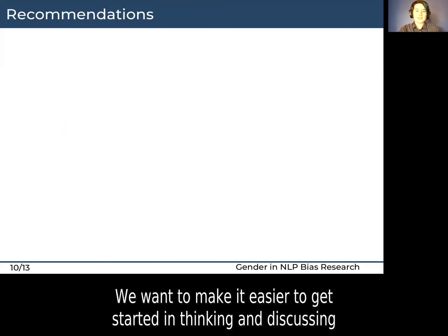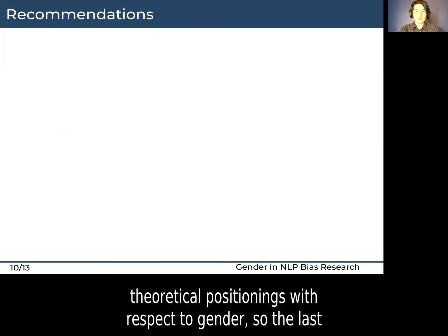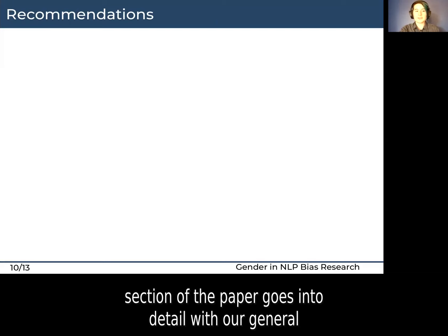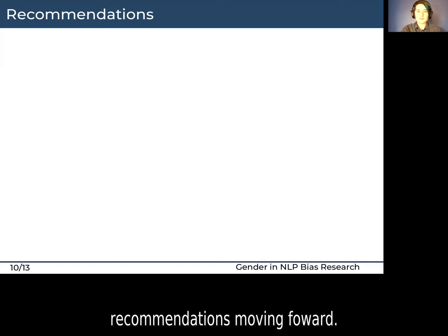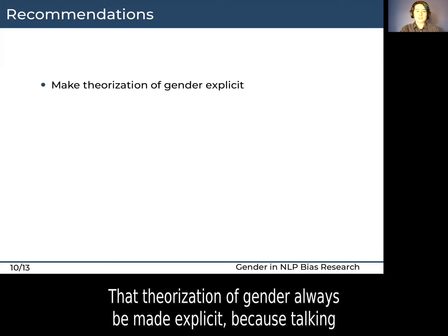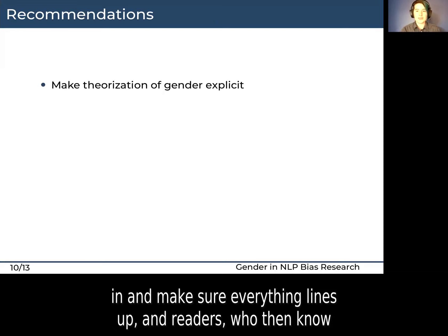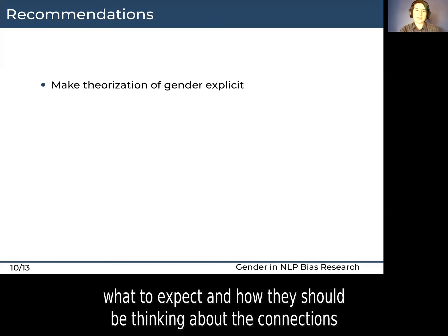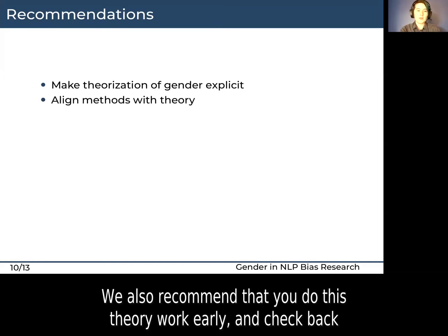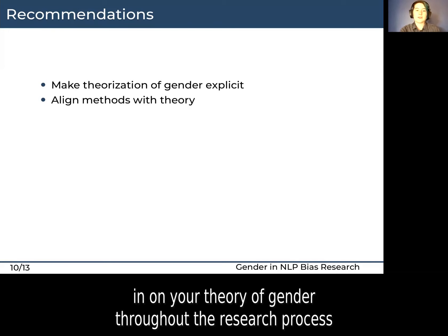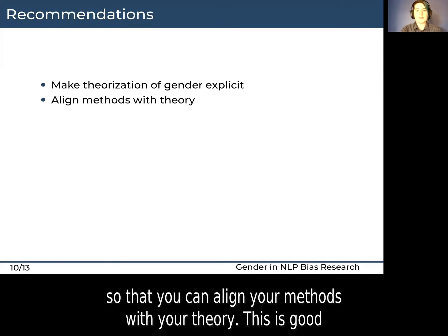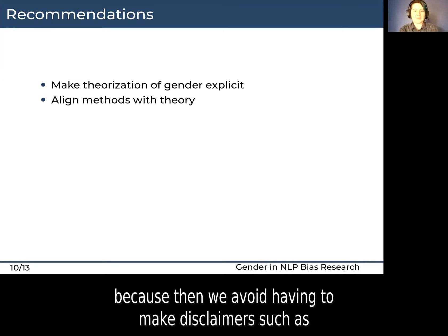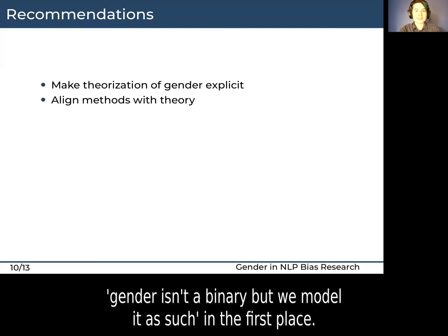We want to make it easier to get started in thinking and discussing theoretical positionings with respect to gender, so the last section of our paper goes into detail with our general recommendations moving forward. We suggest that theorization of gender always be made explicit, because talking about normative assumptions helps both authors — who can check back in and make sure everything lines up — and readers, who then know what to expect and how they should be thinking about the connections between the theory and the method. We also recommend that you do this work early and check back in on your theory of gender throughout the research process so that you can align your methods with your theory. This avoids having to make disclaimers such as 'gender isn't a binary, but we model it as such.'